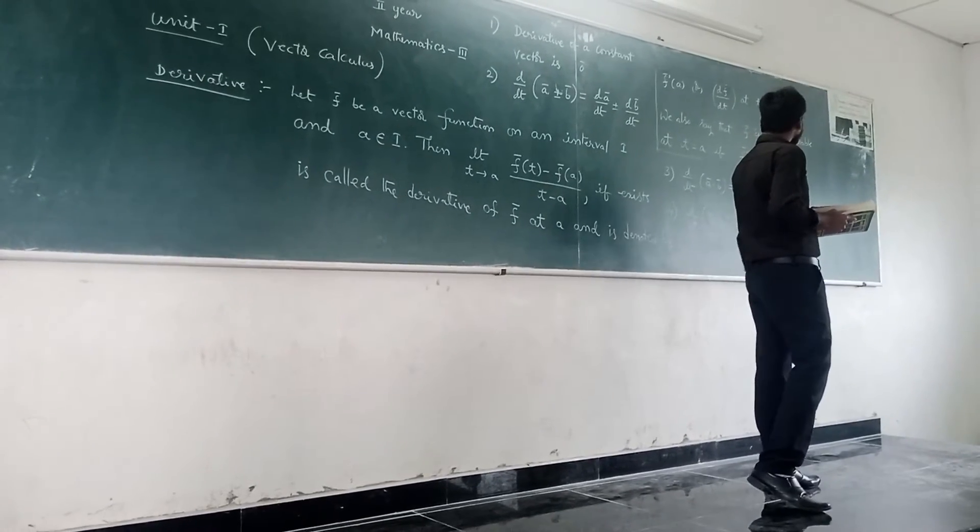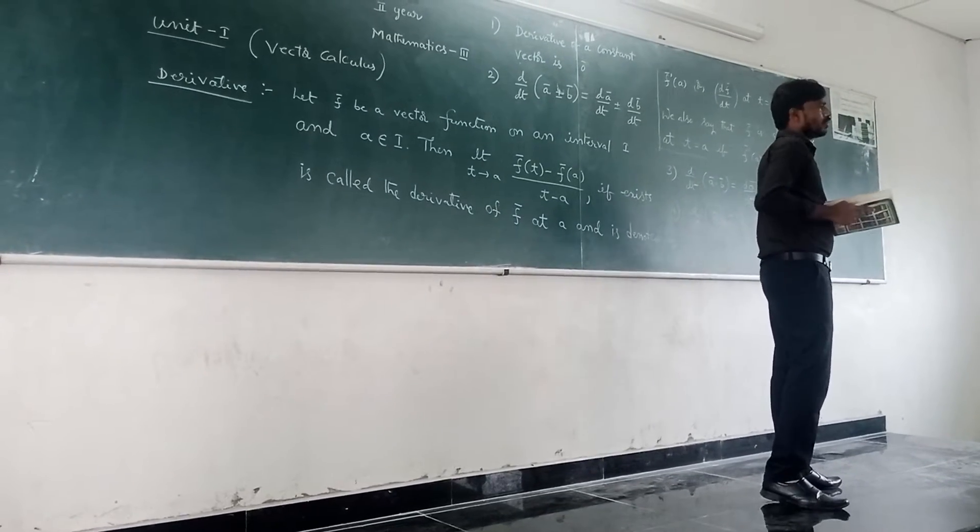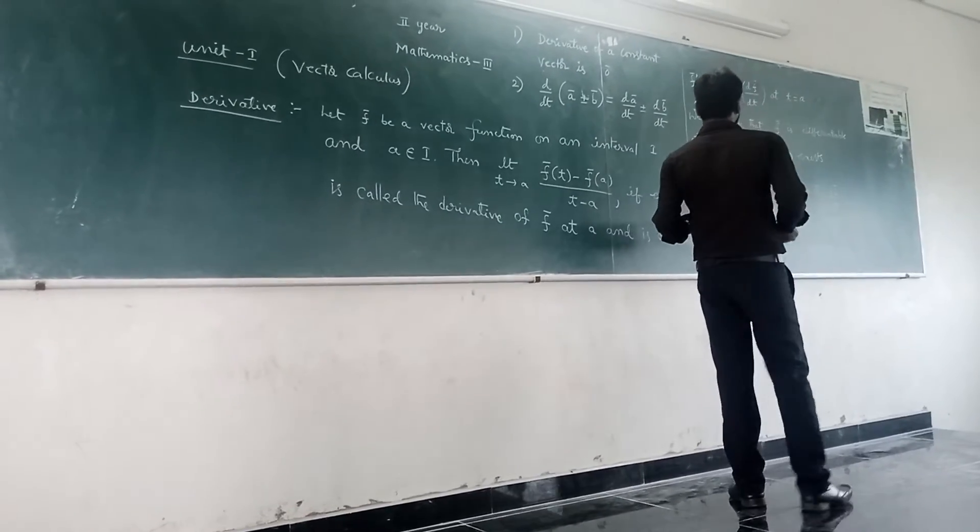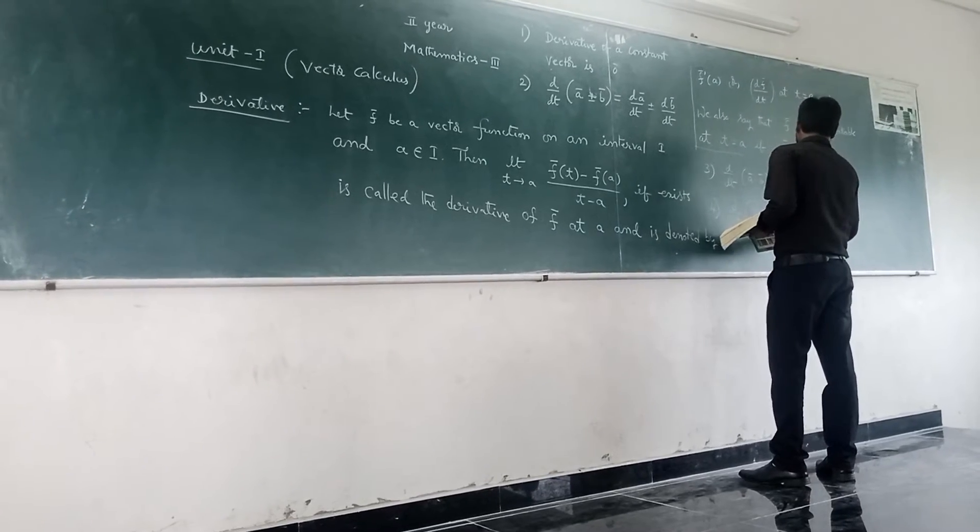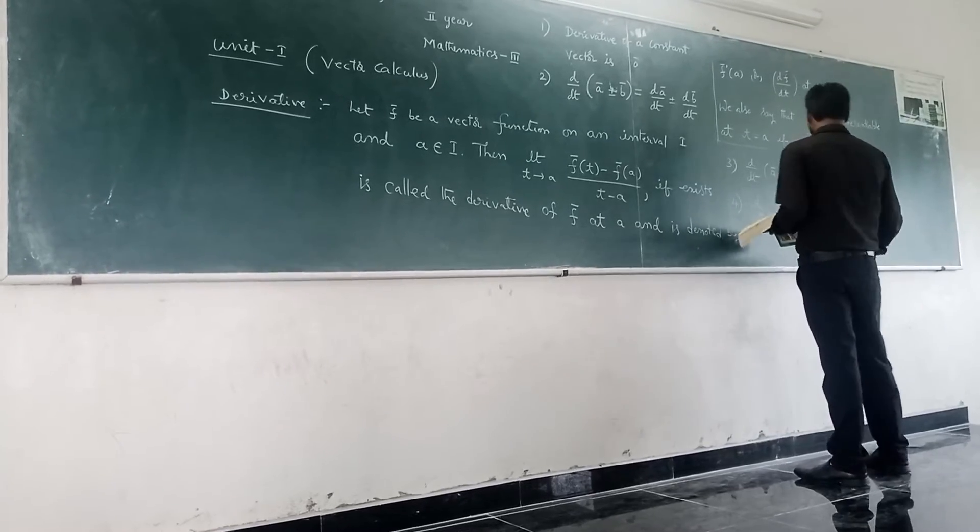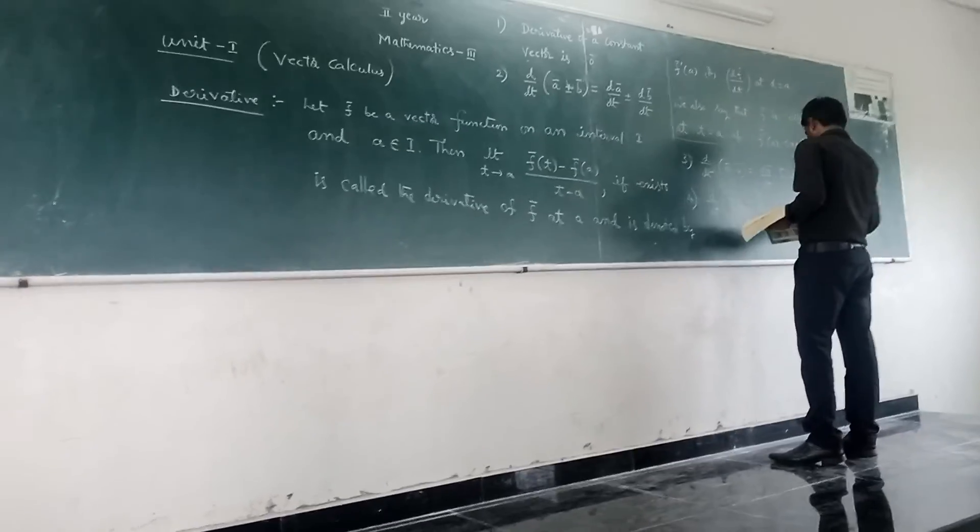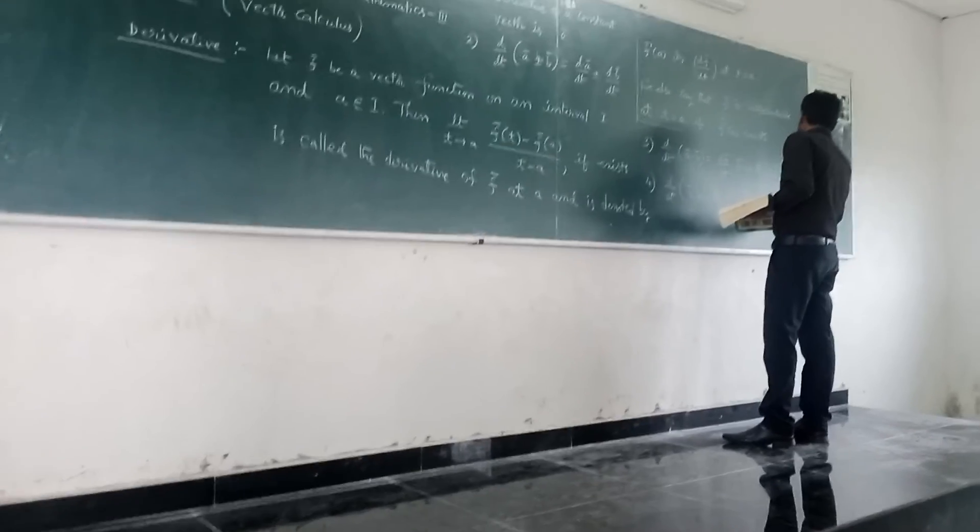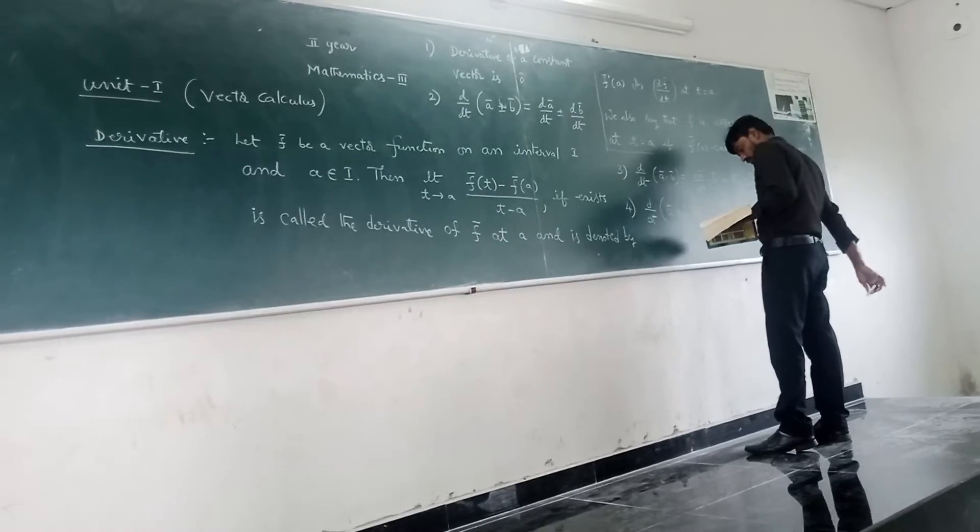And fourth one, derivative of a bar cross b bar equals d a bar by dt cross b bar, plus a bar cross d b bar by dt.